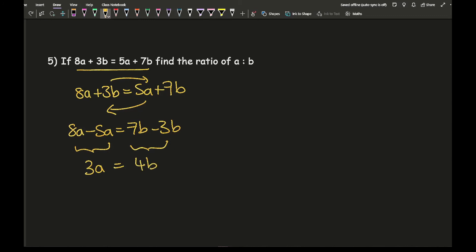As you can see, it turns very similar to the previous examples. I've got a over b equals 4 over 3. From this, a to b is going to be equal to 4 to 3. And there is my final answer.